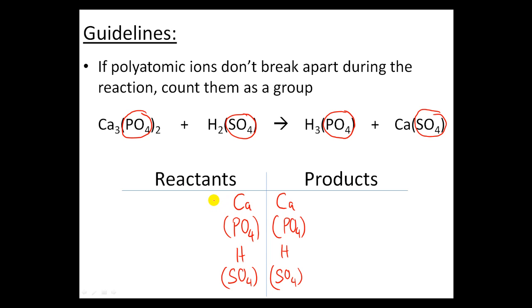Let's give our initial counts. I have three calciums on this side and one calcium on this side. I have two of these phosphates on this side and only one of these phosphates on this side.